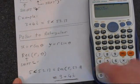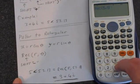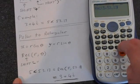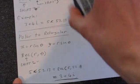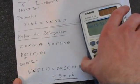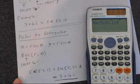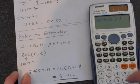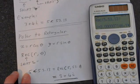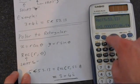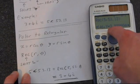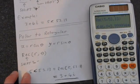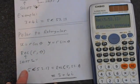Then we'll put in 53.13. This function works in degrees because I've got the calculator set in degrees. So let's press equals, and we get x is 3, and y is essentially 4. And that's exactly what we had before.